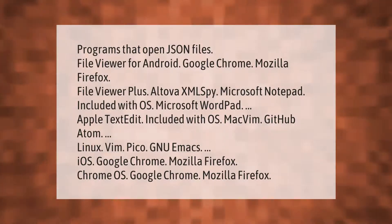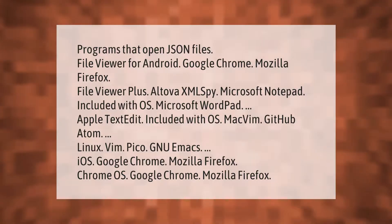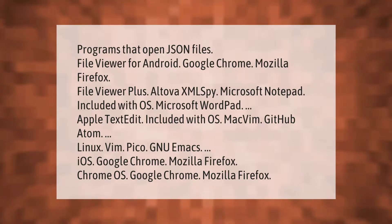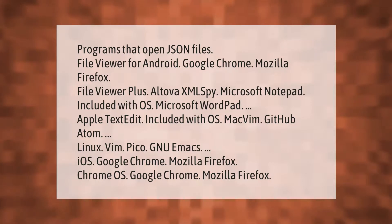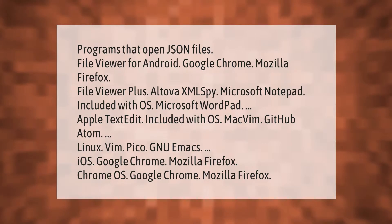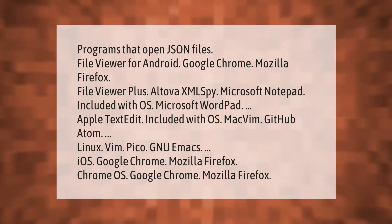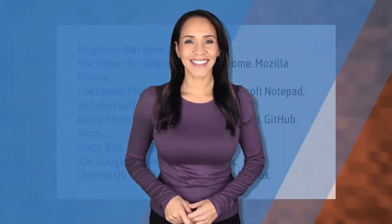Programs that open JSON files include: File Viewer for Android, Google Chrome, Mozilla Firefox, File Viewer Plus, Altova XML Spy, Microsoft Notepad (included with OS), Microsoft WordPad, Apple TextEdit (included with OS on Mac), Vim, GitHub Atom on Linux, Vim, Pico, Emacs, Google Chrome and Mozilla Firefox on iOS, and Google Chrome and Mozilla Firefox on Chrome OS.